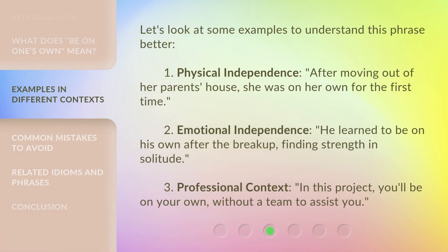Let's look at some examples to understand this phrase better. 1. Physical independence: After moving out of her parents' house, she was on her own for the first time. 2. Emotional independence: He learned to be on his own after the breakup, finding strength in solitude. 3. Professional context: In this project, you'll be on your own, without a team to assist you.